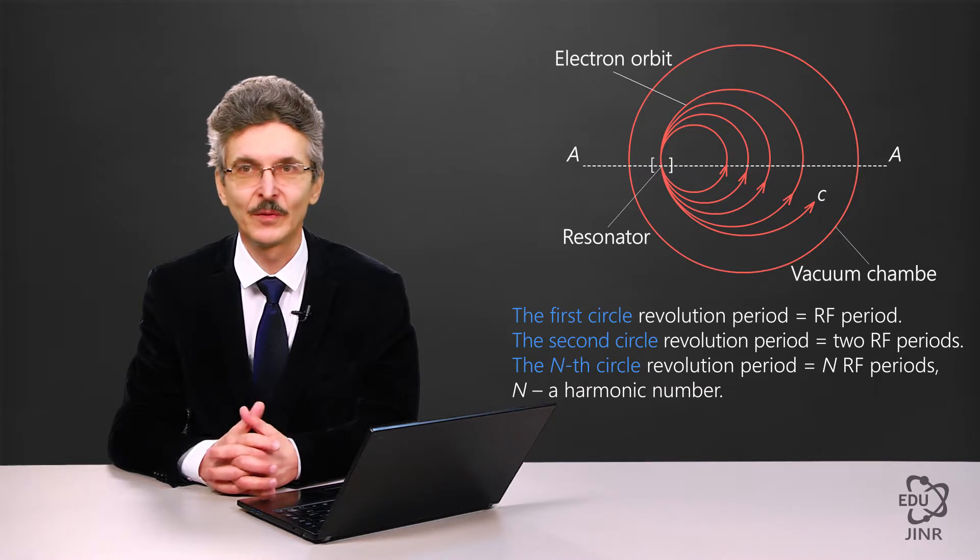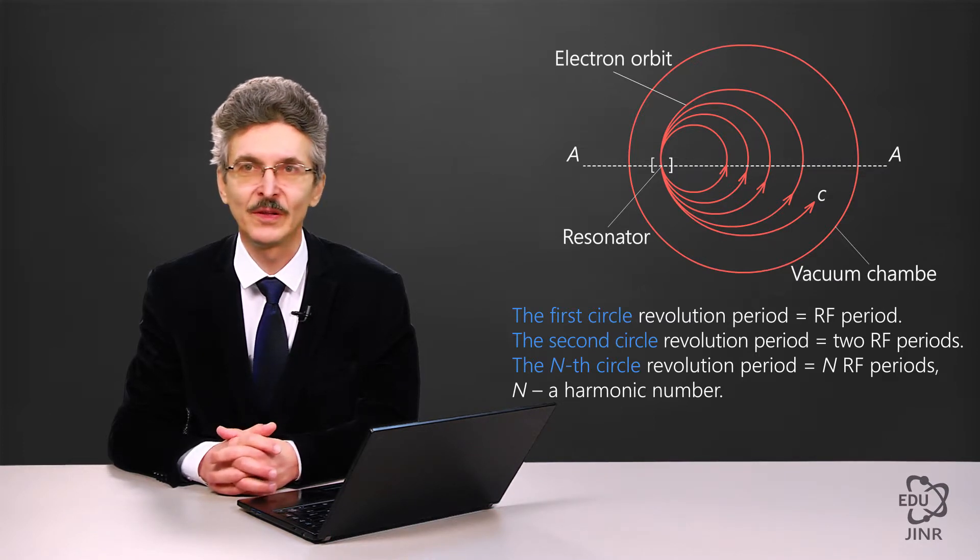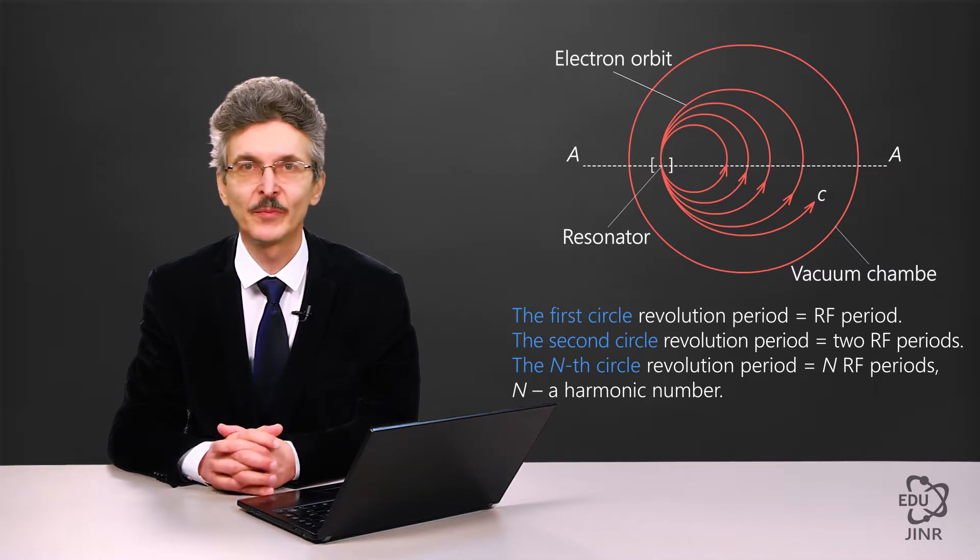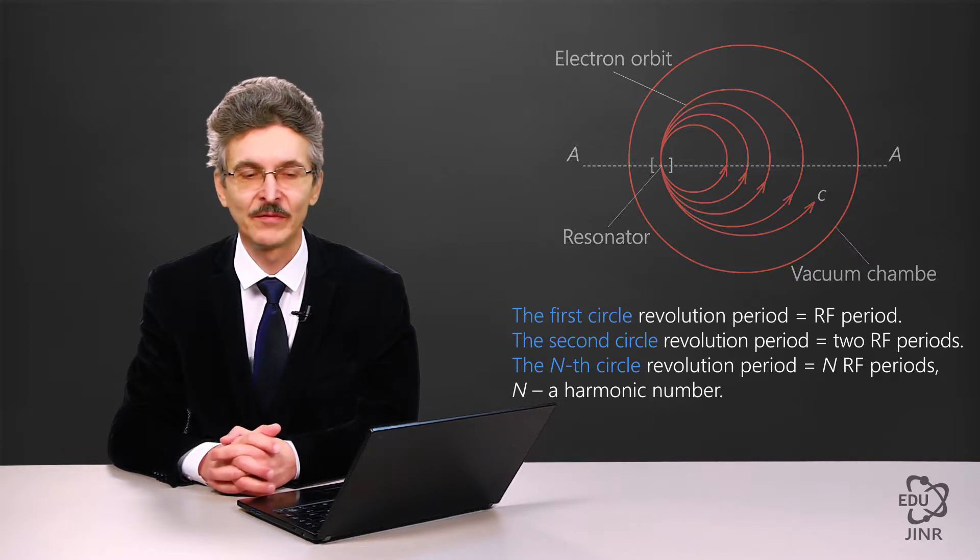The beam will make as many revolutions as will fit on the magnet circumference. The number of RF field periods that an electron beam undergoes within one revolution is called an acceleration ratio or harmonic number. That is why a microtron is an accelerator with a constant magnetic field, with a constant RF frequency, and with an alternating acceleration ratio.